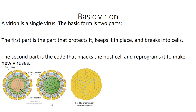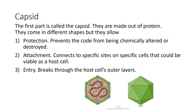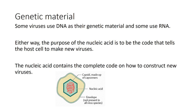The word virion refers to a single virus; the word virus is actually plural. A basic virion has a minimum of two parts. The first part protects it, keeps it in place, helps it break into cells — it's the outer part. The second part is the code that hijacks the host cell and reprograms it to make new viruses. That first part is called the capsid. Capsids are made out of proteins, come in different shapes, and their purpose is protection — preventing the inner code from being chemically altered, destroyed, or accessed. They also enable attachment to specific cells and entry through the outer protection of the host cell.